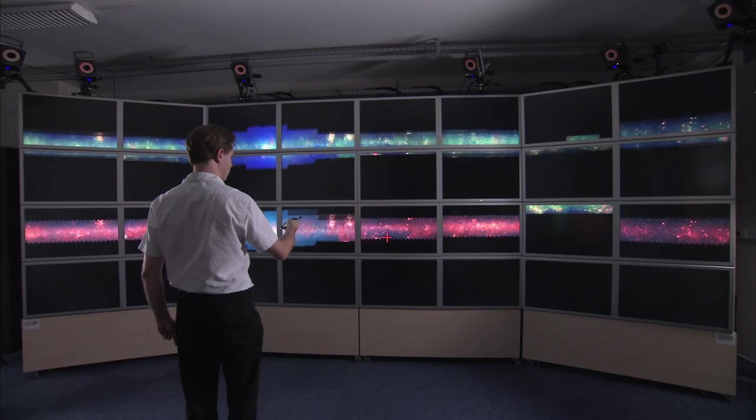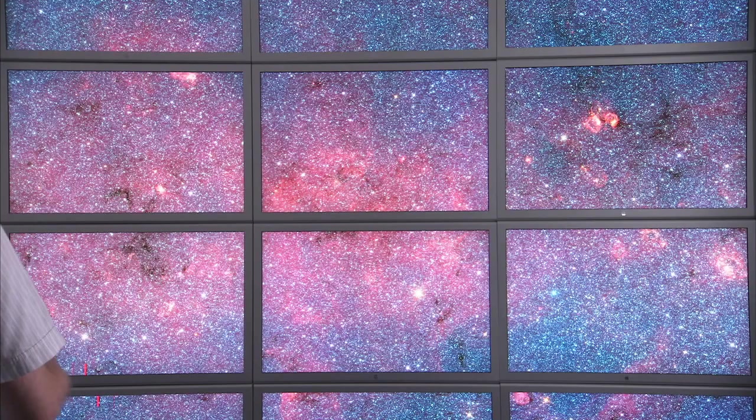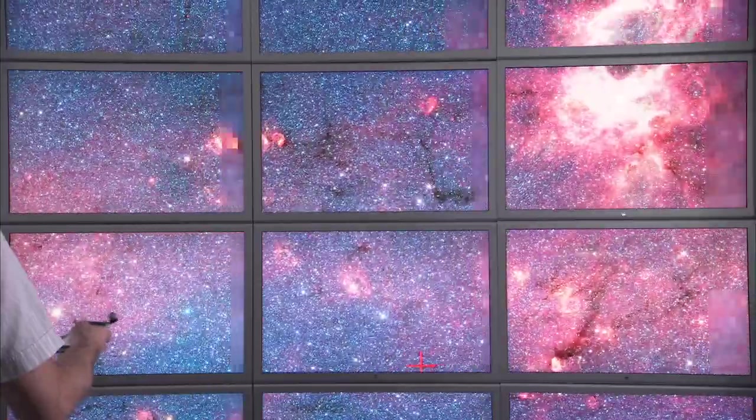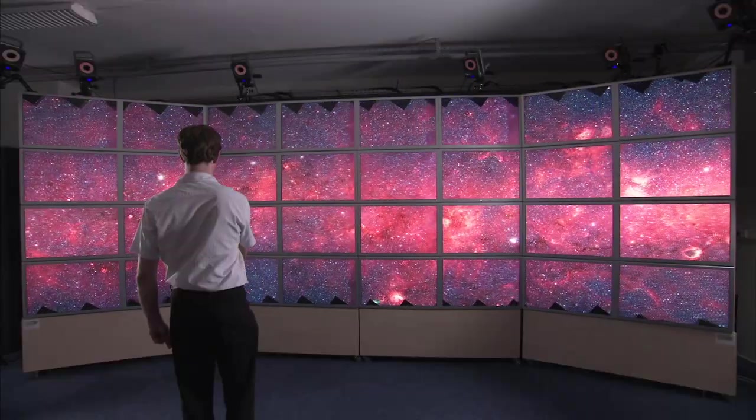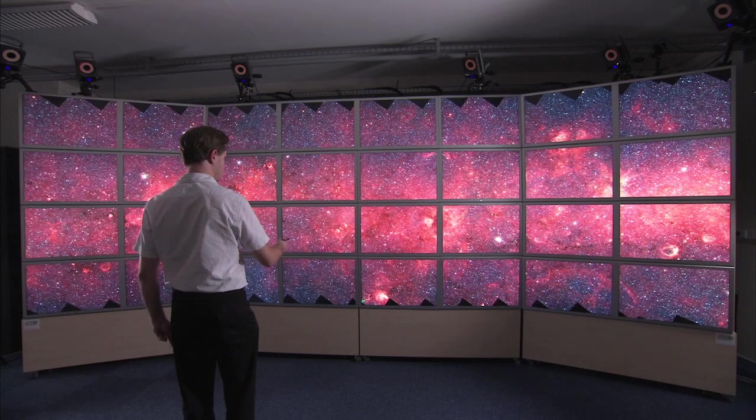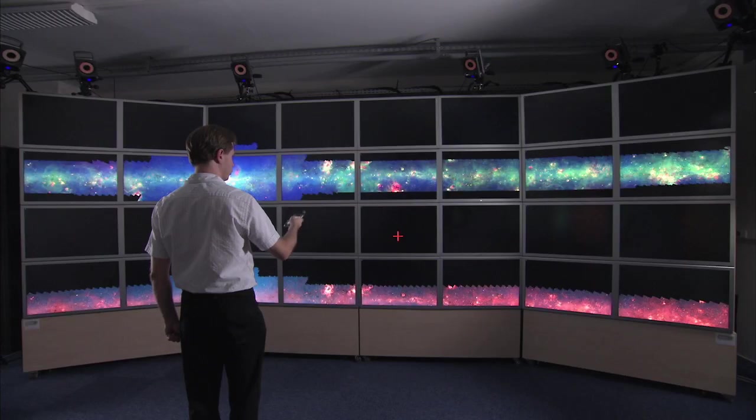One common requirement is to view extremely large images. Here, we navigate an image of the Milky Way galaxy, which is 20 times larger than the wall when seen at full resolution. We developed JBrix, an application framework that supports panning and zooming such large images using, for example, a smartphone.